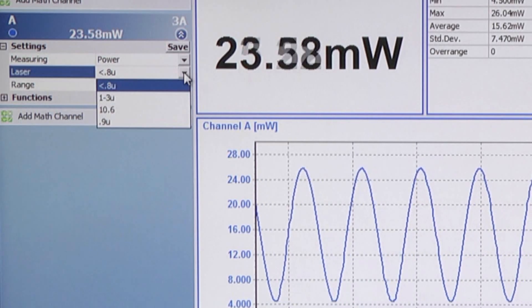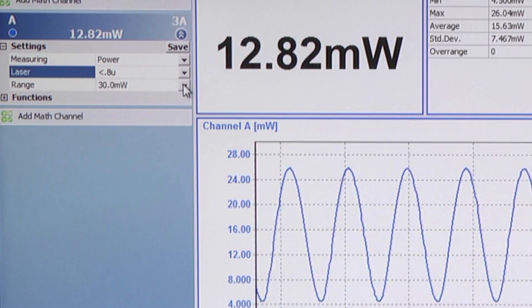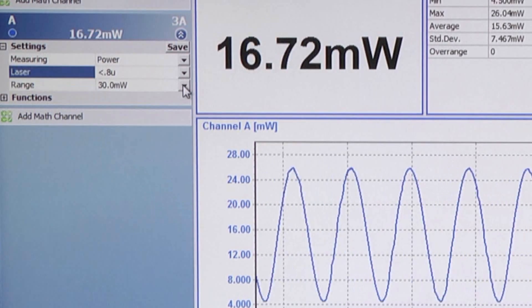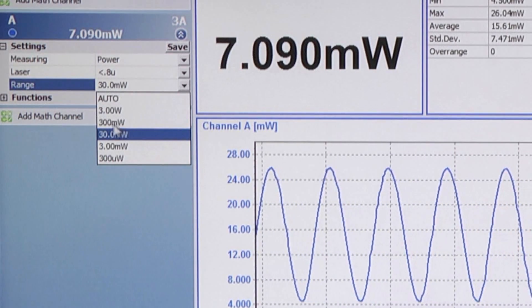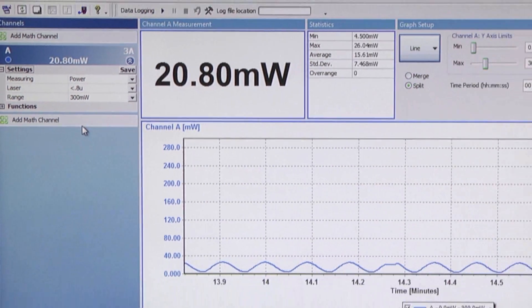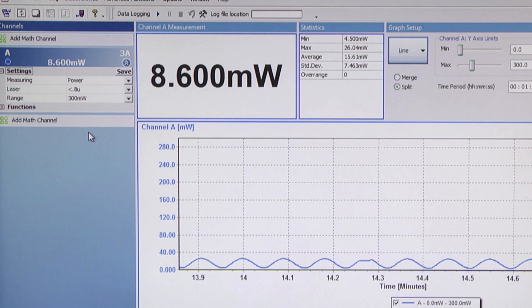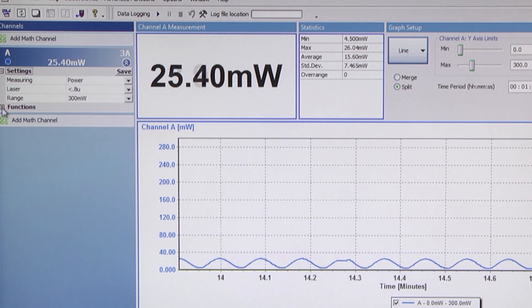Here we choose the correct wavelength range. Here we set up the power scale. Let's change it from 30 milliwatts to 300 milliwatts. We also have various functions available. Let's open the functions area.